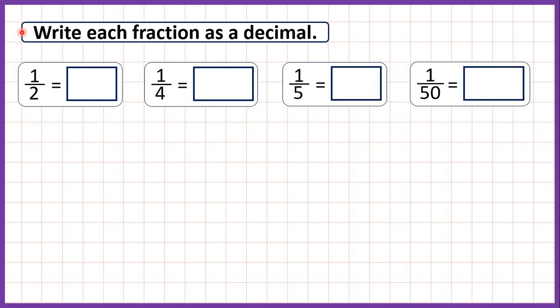We need to write each fraction as a decimal. To do this, we need to remember that some fractions have place values. After the decimal point we have the tenths column and then the hundredths column. So we need to find equivalent fractions which have either tenths or hundredths as the denominator.